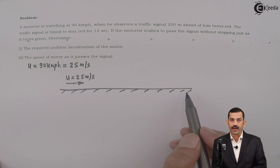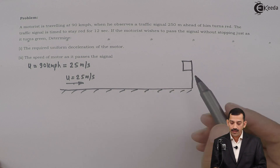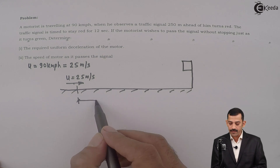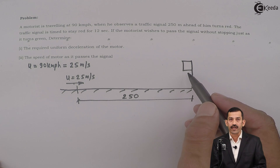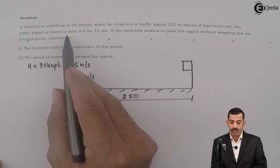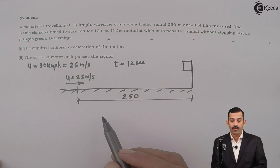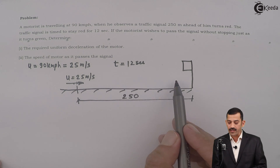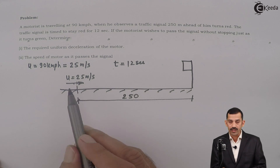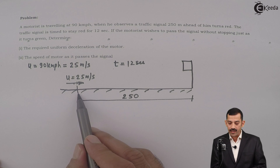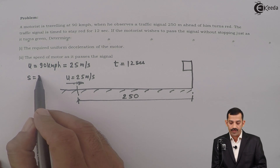On the road, the car travels in the right direction and there is a signal on the right-hand side, located 250 meters ahead. This signal turns red and the time to stay red is 12 seconds, so T is given as 12 seconds. The motorist wants to cover this distance without stopping — that means in 12 seconds, with the initial velocity, it has to cover a displacement of 250 meters. So S equals 250 meters.